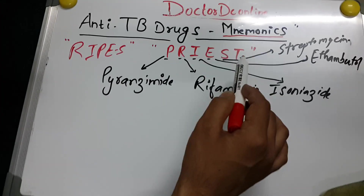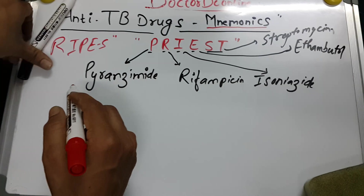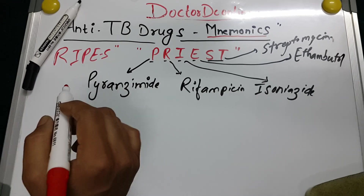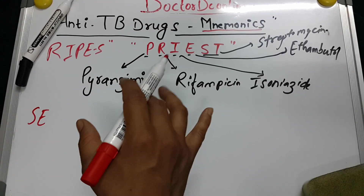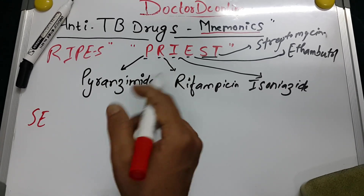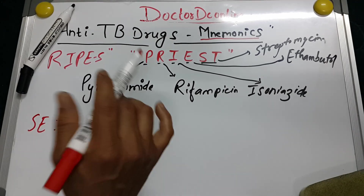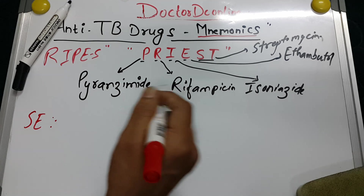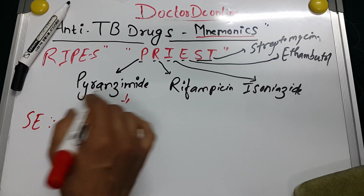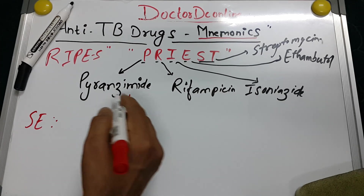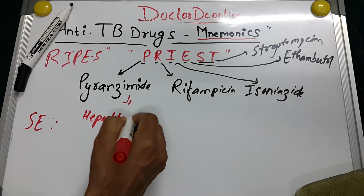These are the first-line drugs for tuberculosis. We also have second-line drugs, but these are the first-line. An important thing to remember for MCQs is the side effects — most MCQ questions are based on the side effects of these drugs.